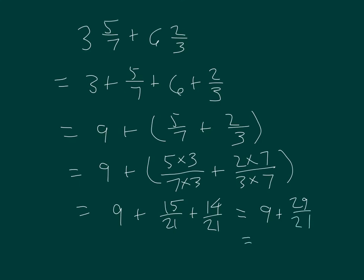21 goes into 29 one whole time with a remainder of 8, so I have 9 plus 1 and 8 twenty-firsts, which equals 10 and 8 twenty-firsts. The sum is between the whole numbers 10 and 11, and the answer is 10 and 8 twenty-firsts.